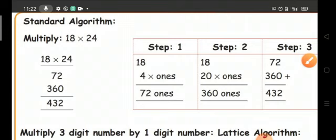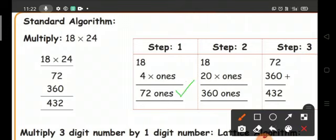Step 1: 18 times 4, you get the answer 72 ones. Then 18 times 20, 360 ones.